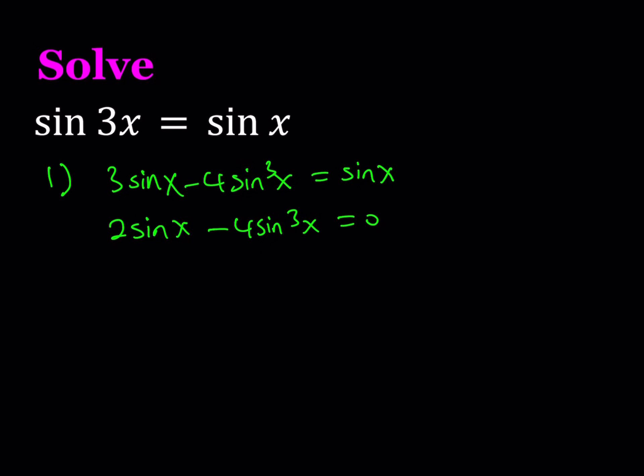And then I can factor out 2 sine x. And from here I get 1 minus 2 sine squared x equals 0. By setting each factor equal to 0, from here I get sine x equals 0, which obviously has solutions where x is equal to n pi. So if x is a multiple of pi, then sine x is going to be 0.